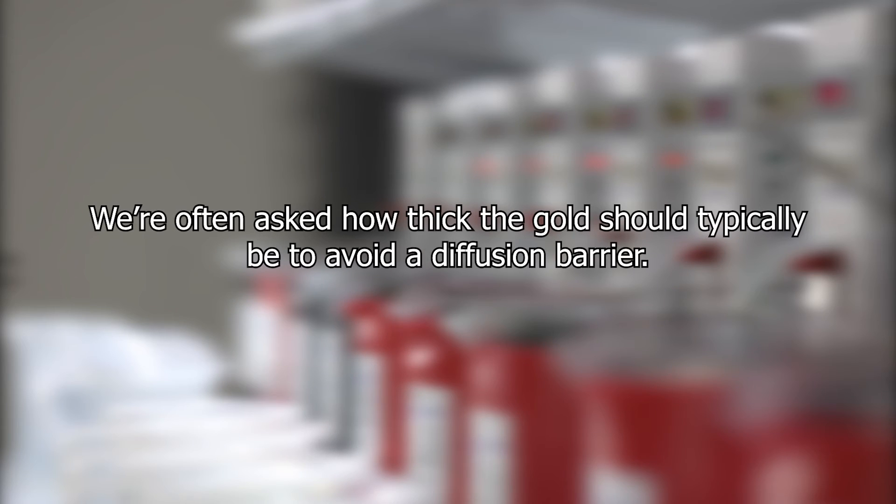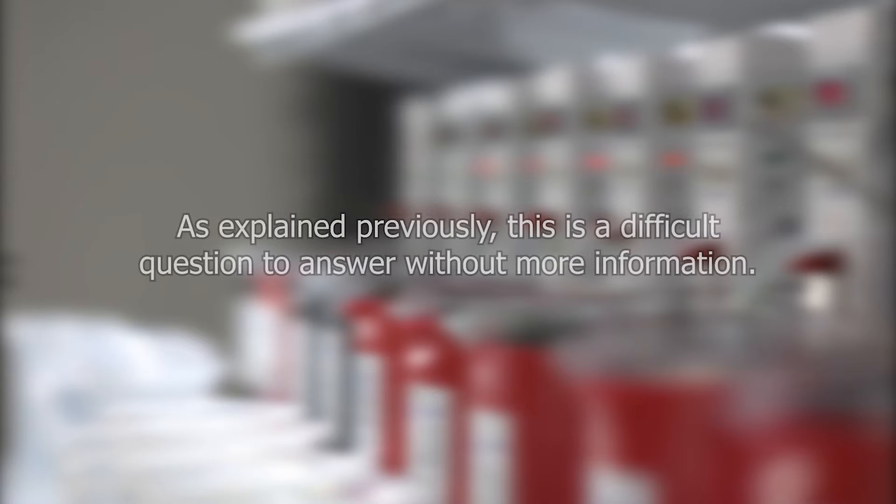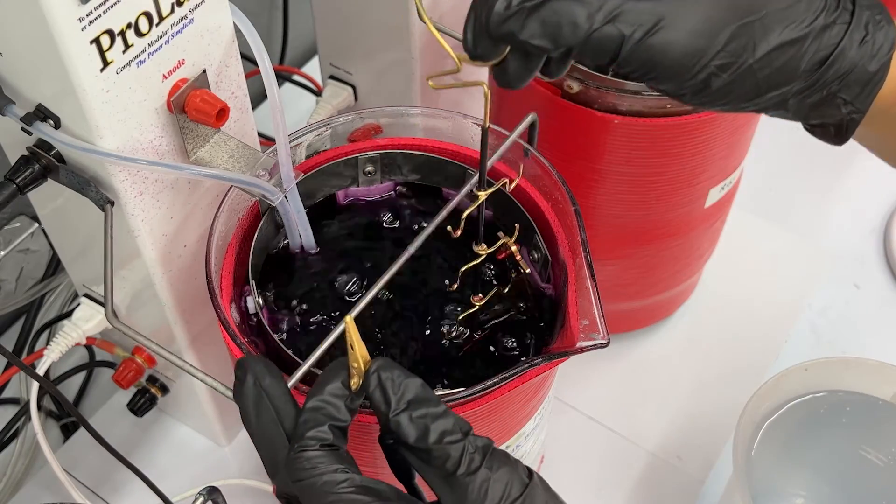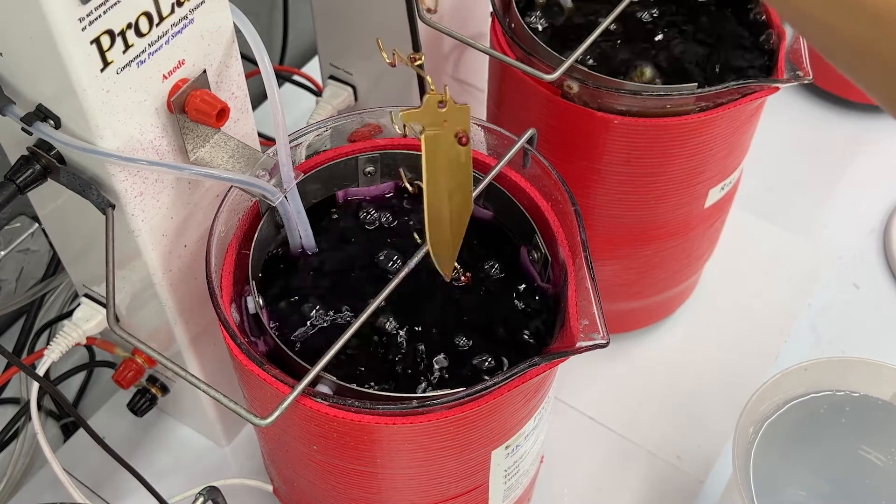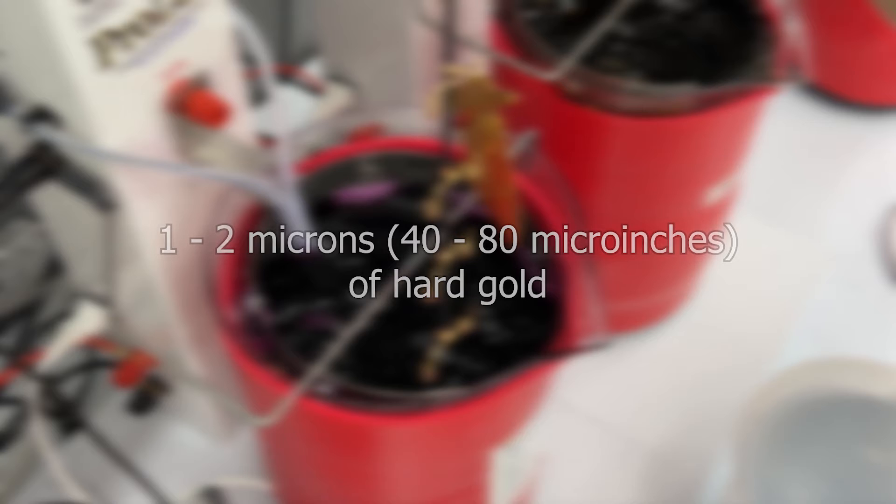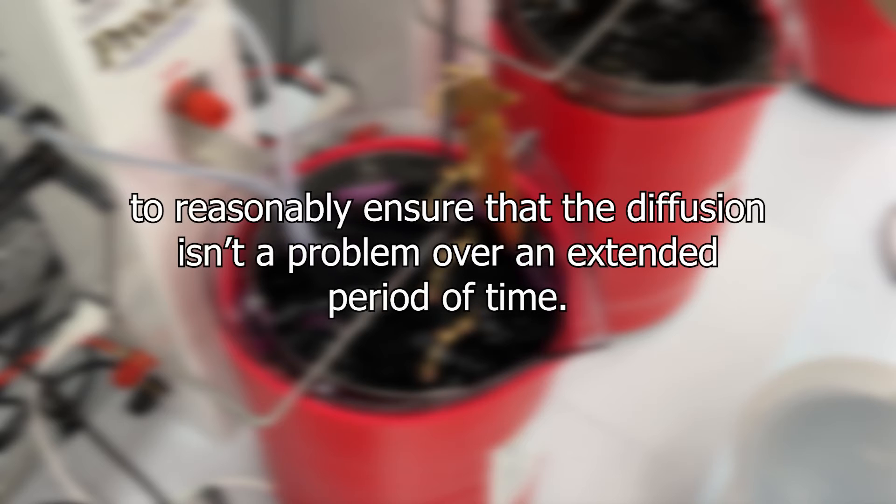We are often asked how thick the gold should typically be to avoid a diffusion barrier, but as explained previously, this is a difficult question to answer without more information. However, generally speaking, an item exposed to average room type conditions should have at least one to two microns or 40 to 80 micro inches of hard gold to reasonably ensure that the diffusion isn't a problem over an extended period of time.